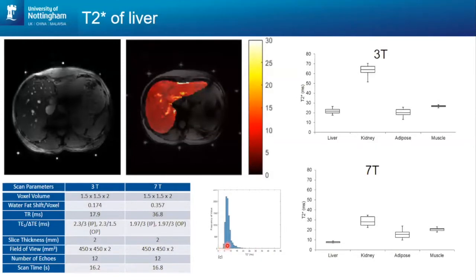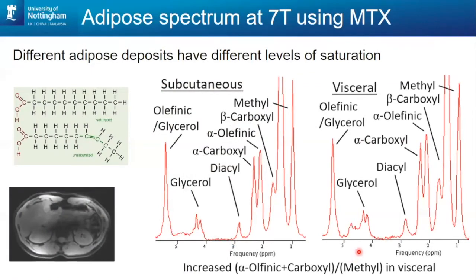The liver similarly produces nice angiography at 7T, and it's interesting to look at the arterial and venous supplies. We've measured T2* — it differs in the liver between 3T and 7T. The real place for 7T in the abdomen will actually be spectroscopy. We've been looking at differences between subcutaneous and visceral fat spectroscopy, examining different peaks in fat and trying to calculate the saturation index. We haven't found much difference in saturation index between these tissues so far, but we want to look at this more in patients with liver disease.